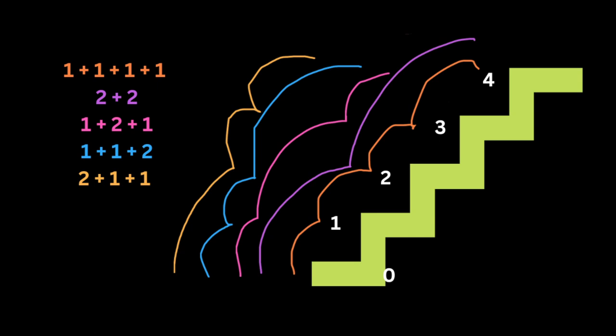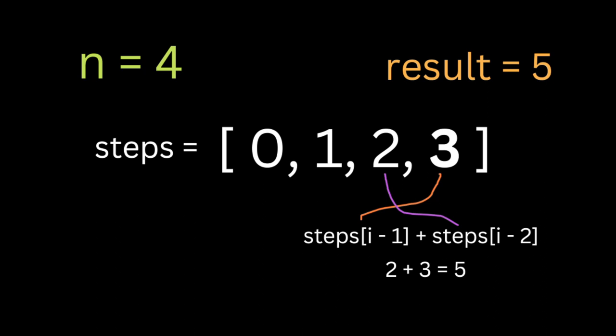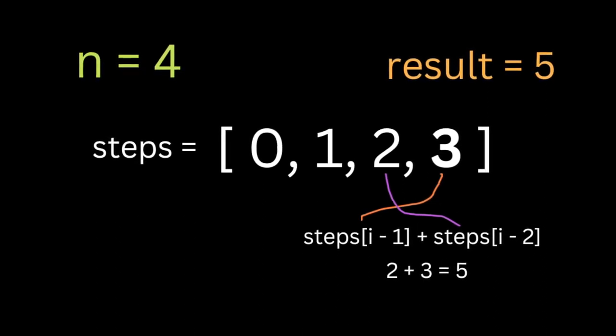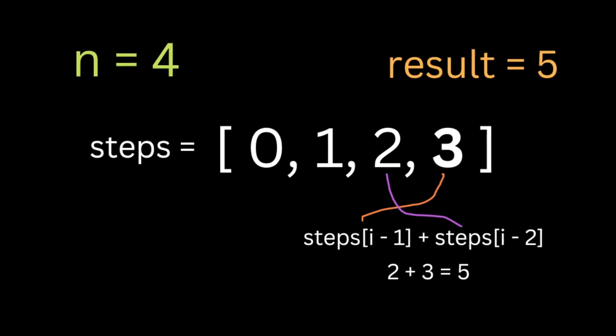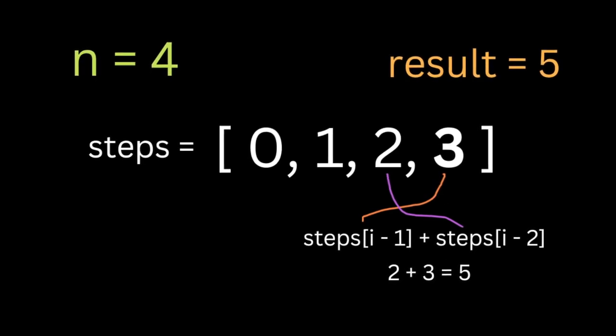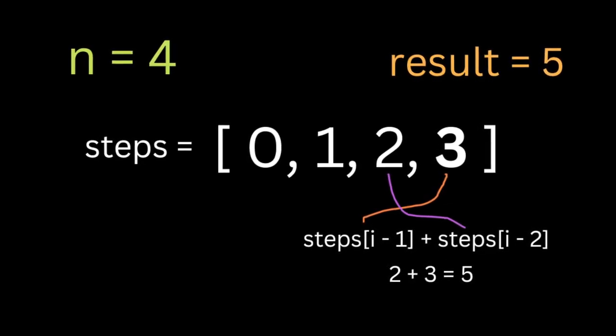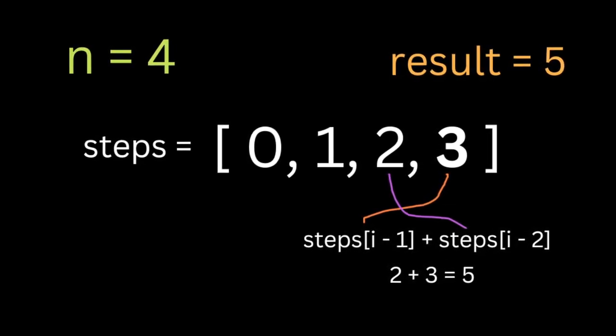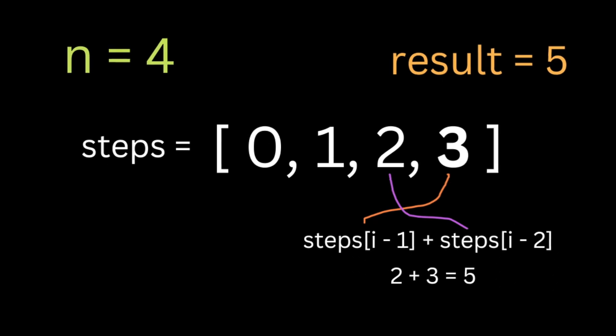To reach three steps we need three steps. Then, to find how many ways we can climb to reach step four, we have to add the previous two values — step n minus one plus step n minus two. That's why we use the Fibonacci series. It means if we want to find how many ways we can climb to the top,